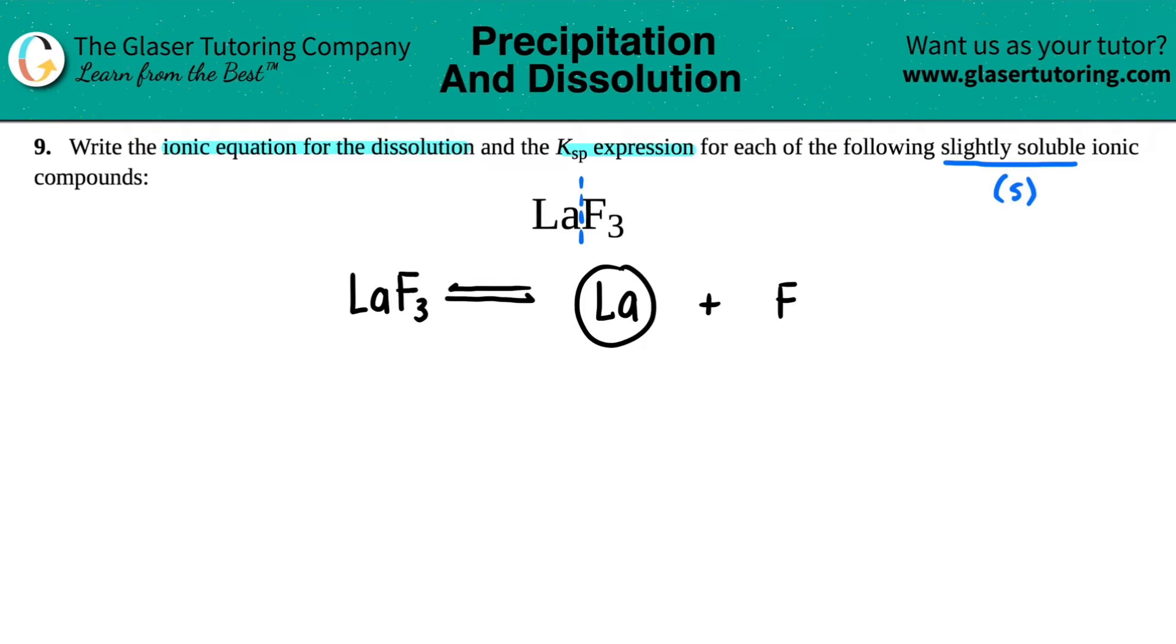But now remember, they're forming their ions. So I need to find a charge in the upper right-hand corner. Well, we could do the crisscross method. There was one La for every three fluorines. This one crisscrosses up to fluorine, telling me that fluorine was a negative one charge. And this three crisscrosses up, telling me that La was a plus three. And those are your charges.